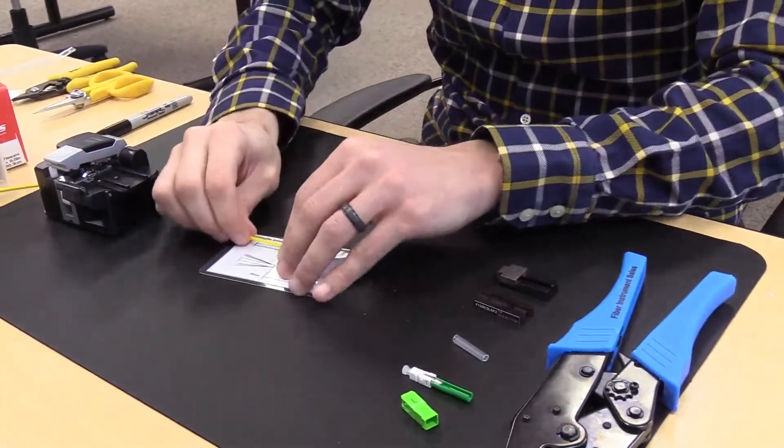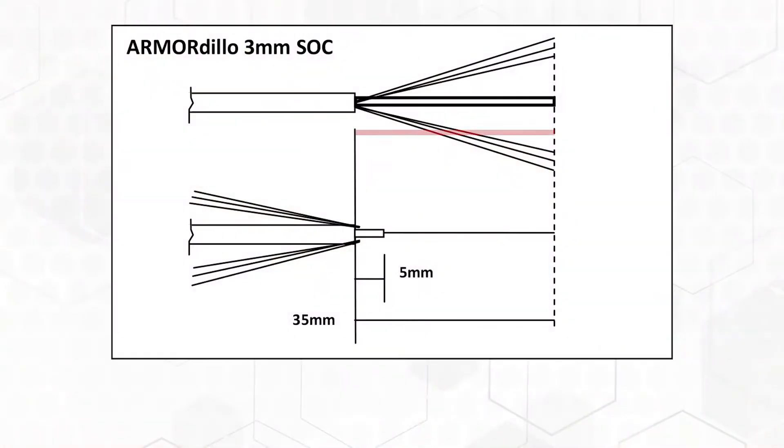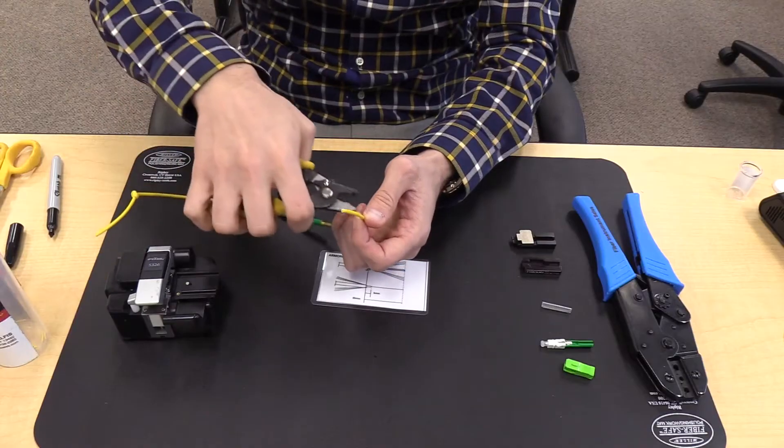Next, use the strip chart to first remove the 3mm cable jacket by measuring 35mm. Take the tri-hole stripper and strip.